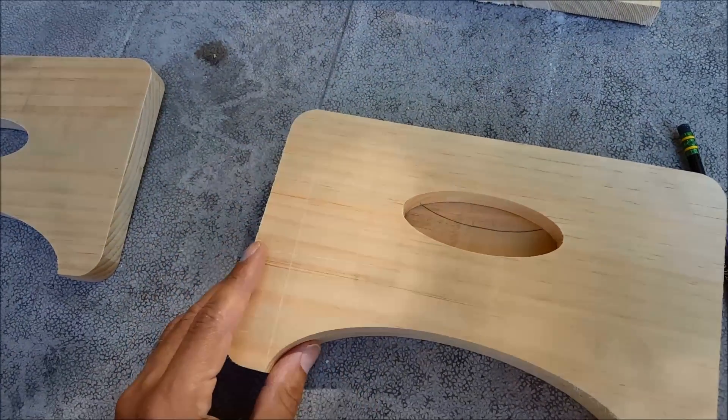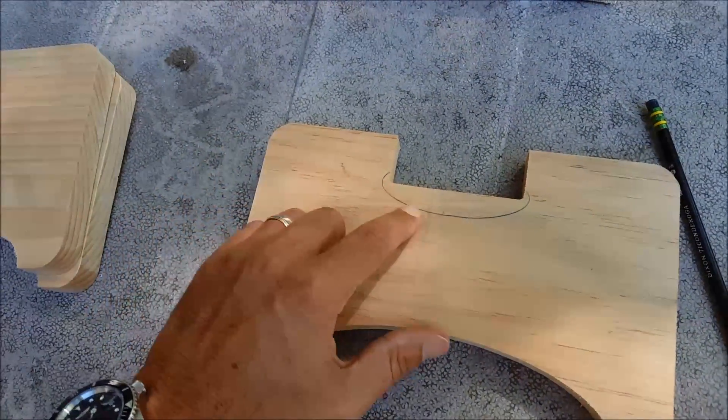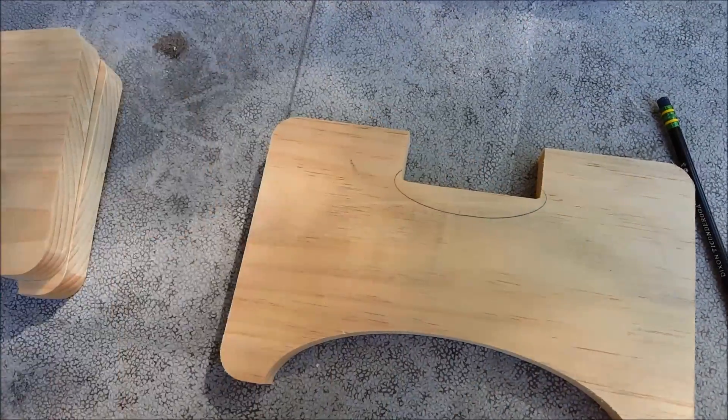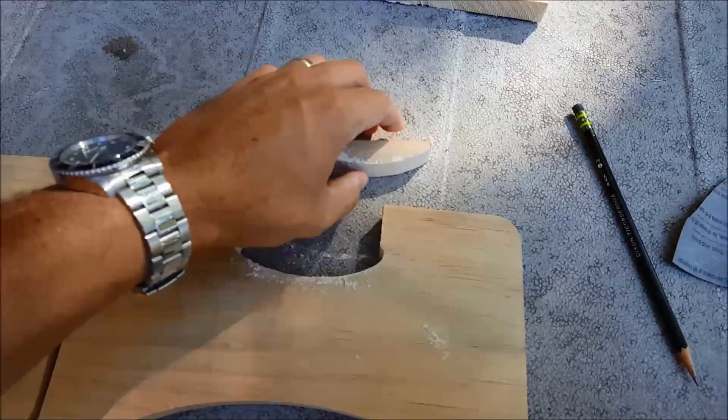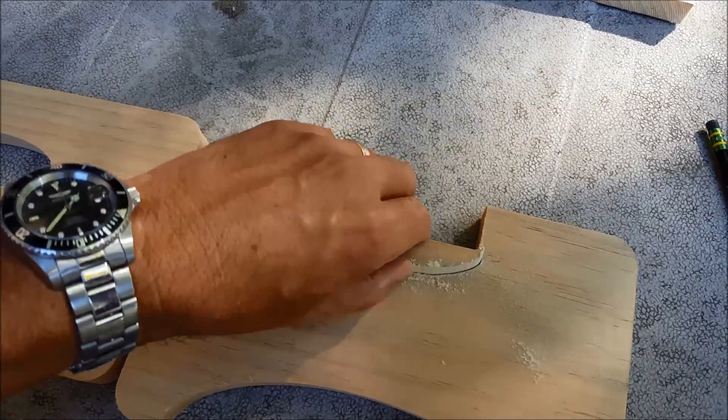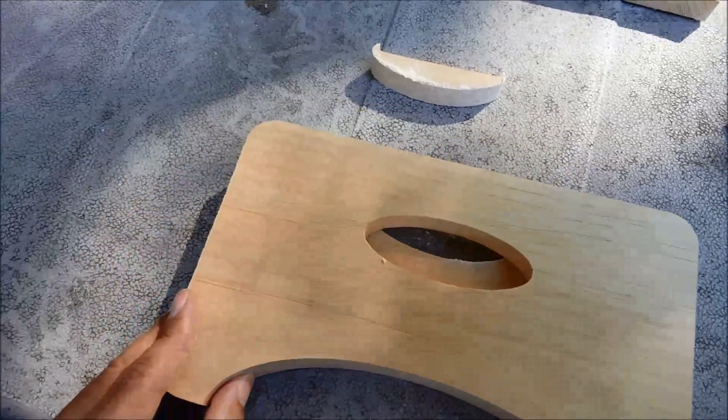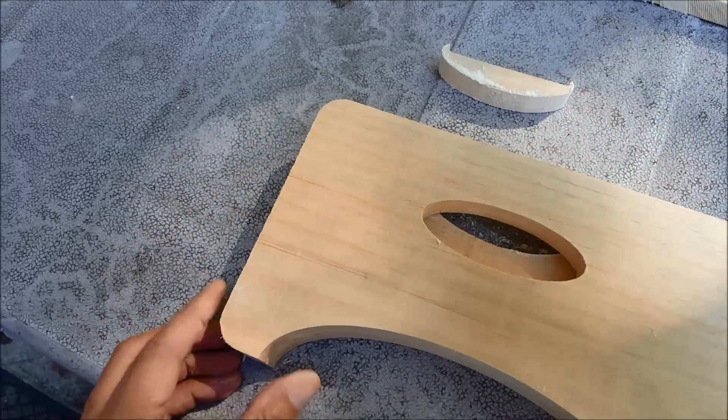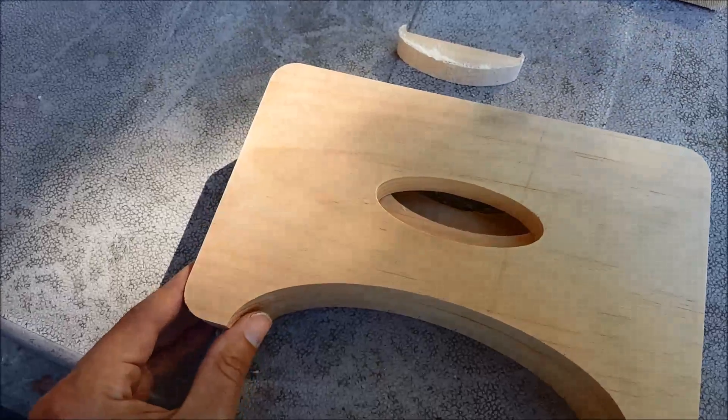But we've got a problem because it should be sitting more like that. So we could redesign this on the CNC or we could just take a minute on the scroll saw, and just cut a little bit more out there. Okay. First, second, and third. A quick one minute cut on the scroll saw. We cut out our little extra piece. We'll clean this up. We've got our space for the phone speakers. And our front piece.